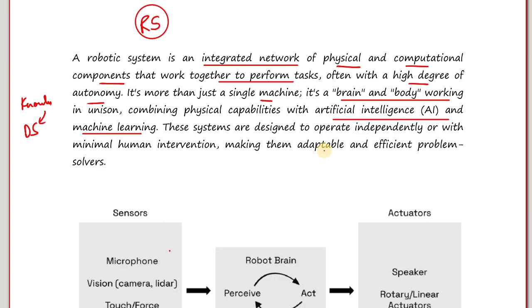The RS systems are designed to operate independently or with minimal human intervention. There is also something called automation, which is quite similar in concept to a robotic system — and in a separate video, I will talk about the comparison with examples. These systems are very adaptable to the environment and are extremely good problem solvers.